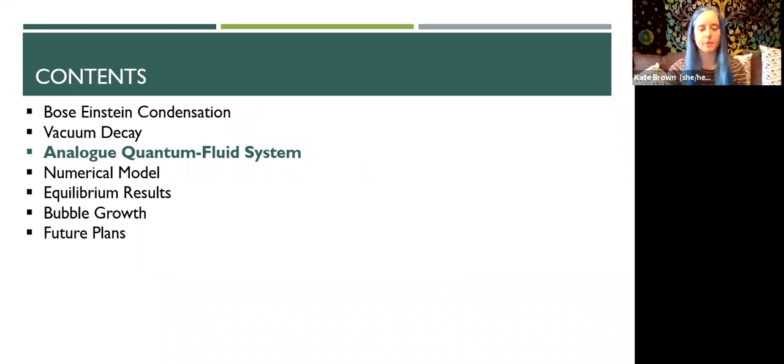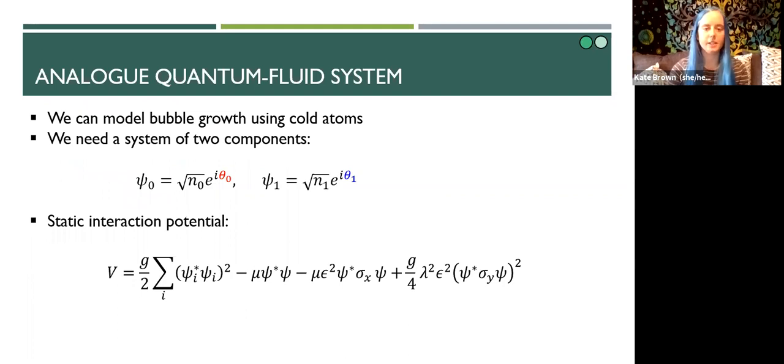So how can we model this using quantum fluids? For this we need a cold atom system comprising of two different components each with their own wave function. It's convenient to write each wave function in terms of the particle density and phase of each component. The particles in our system interact via a time independent interaction potential of this form. Here G is the interaction strength and each species has the same interaction strength. Mu is the chemical potential, these sigma terms are Pauli rotation matrices and I'll explain what lambda and epsilon are on the next slide.